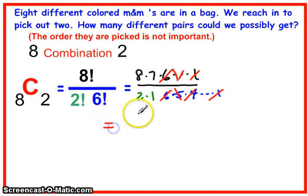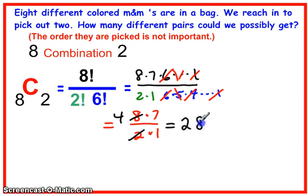That just leaves us 8 times 7 over 2 times 1. The 8 and 2 can be reduced, which just leaves us 28. So there should be 28 different pairs of M&Ms that we could choose.